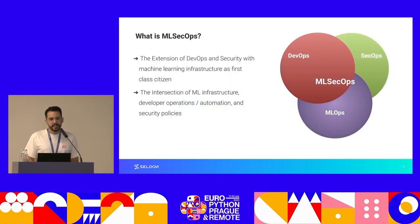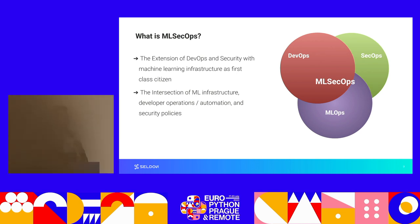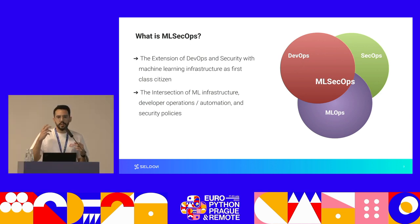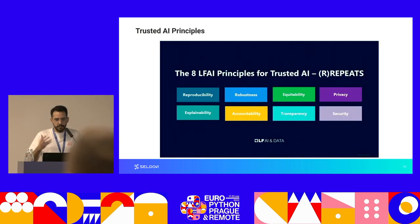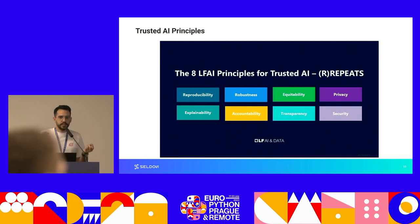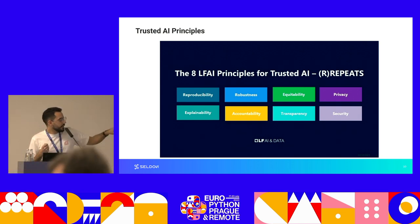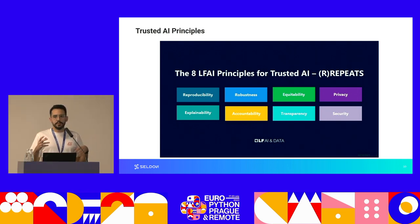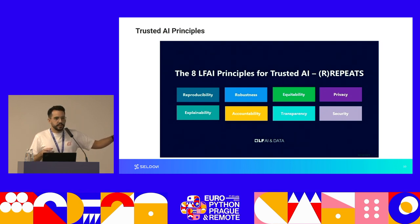All of this is encompassed within the ML SecOps field, a new nascent discipline that tries to intersect machine learning operations, developer operations, and security policies. You may ask yourself: why do we need to care about security? The Linux Foundation for AI and Data published eight principles for trusted AI. With the rise of LLMs, you've heard a lot about model alignment, model safety, and transparency — but none of that matters if you don't nail security, because anyone could attack your system to tweak your model outputs to whatever they want.